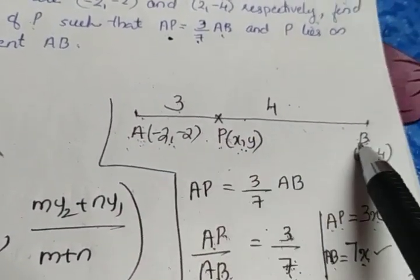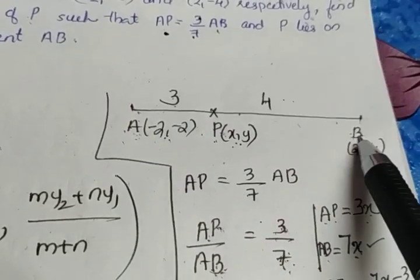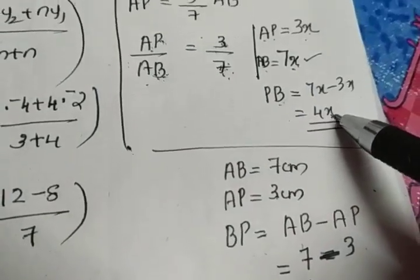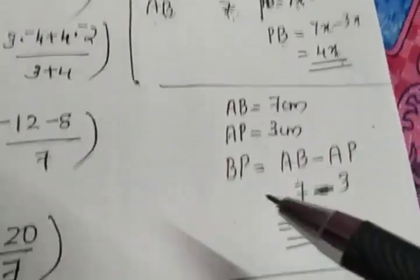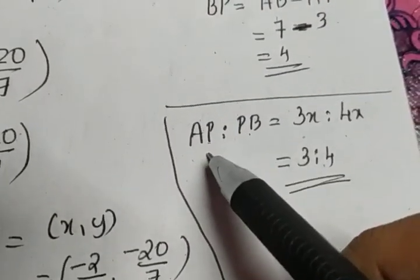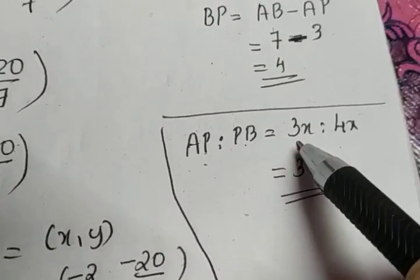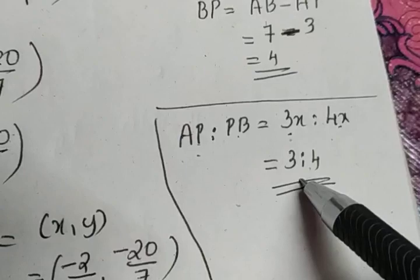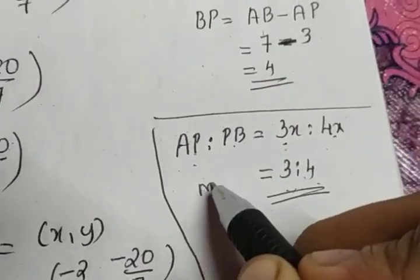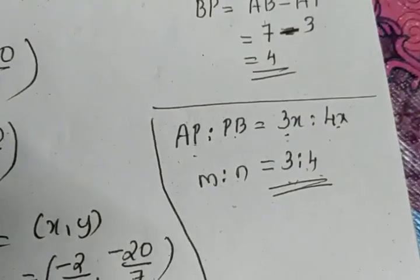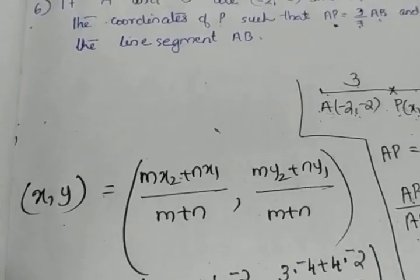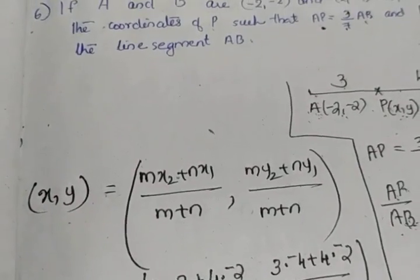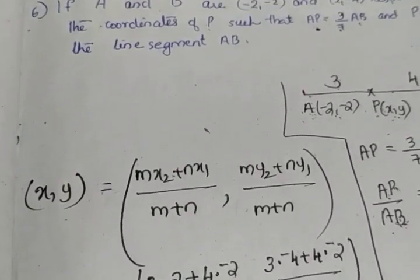To find PB, we take the complete line segment length 7X minus AP (3X), giving 4X. The ratio AP to PB is 3X to 4X, which simplifies to 3 to 4, so M to N = 3 to 4. Then we directly apply the section formula: (M·X2 + N·X1)/(M+N) and (M·Y2 + N·Y1)/(M+N).